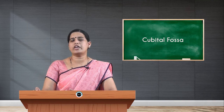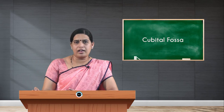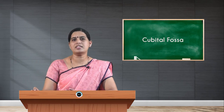The contents of the cubital fossa, named from lateral to medial, are: first the radial nerve, dividing here into its superficial and deep branches; then the tendon of biceps brachii passing to its insertion; medial to that is the brachial artery with its two terminal branches — radial and ulnar arteries; and the medial-most structure is the median nerve.